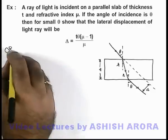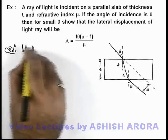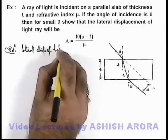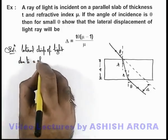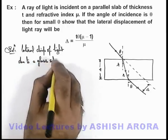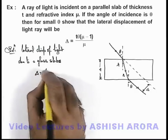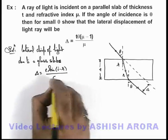We have already studied in previous sections that lateral displacement of light due to a glass slab can be given as Δ = t sin(i - r) / cos r.